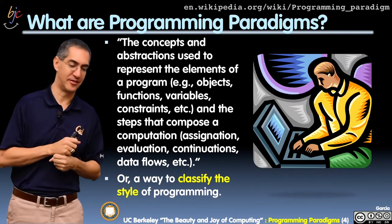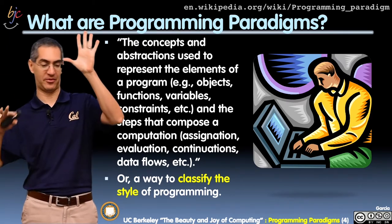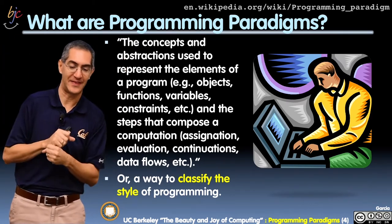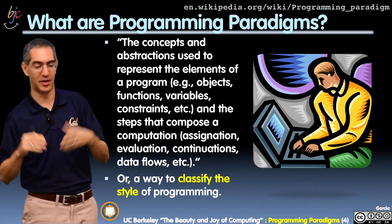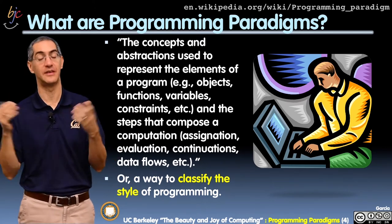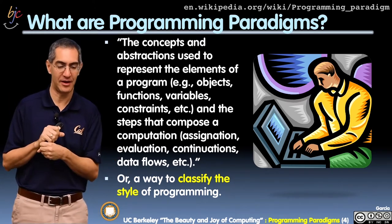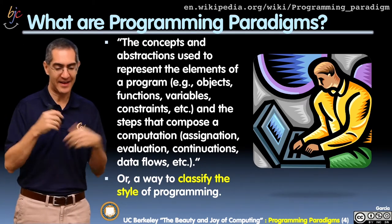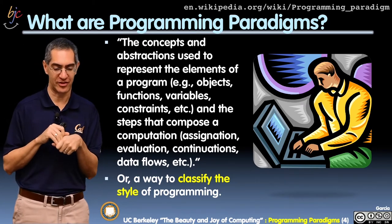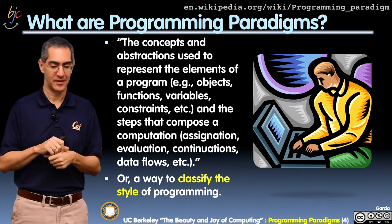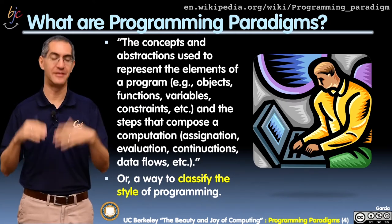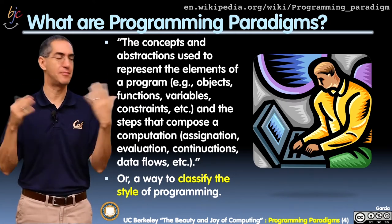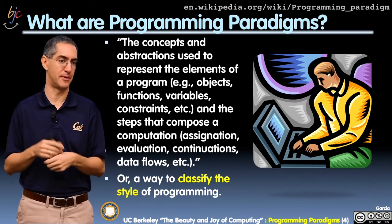Formally, this is the definition from Wikipedia: the concepts and abstractions used to represent the elements of a program—for example, objects, functions, variables, and constraints—and the steps that compose a computation: assignment, evaluation, continuation, data flow. All these are complicated words, but it means the style you use to program a computer.